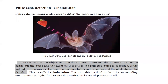Pulse echo detection, or echolocation, is used to find the position of an object. For example, a bat sends out a pulse, which is received back after reflection. Using the pulses it can determine the distance between the source and the object. A change in frequency can also indicate whether a prey is moving toward or away from the source. Using a shorter pulse or higher frequency gives a more detailed image with less diffraction.